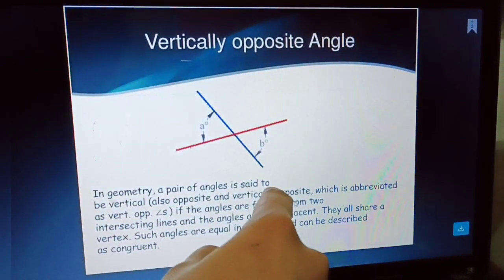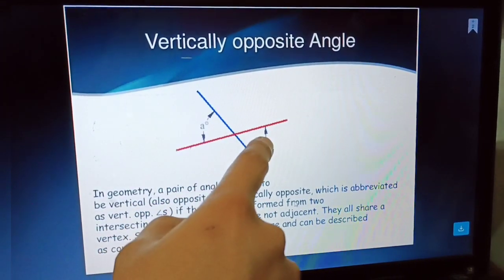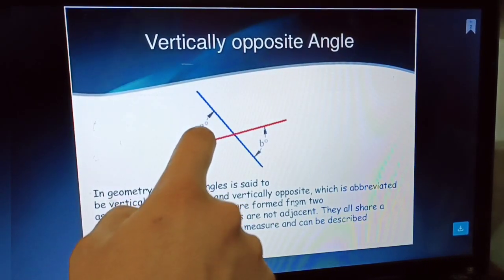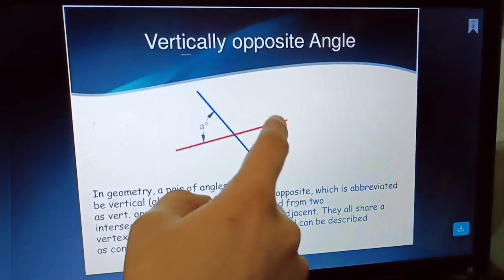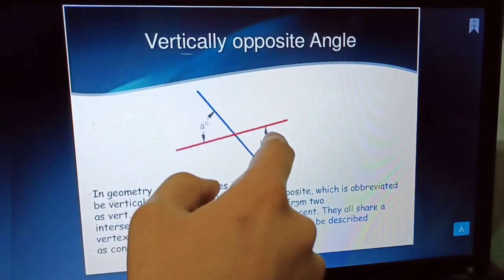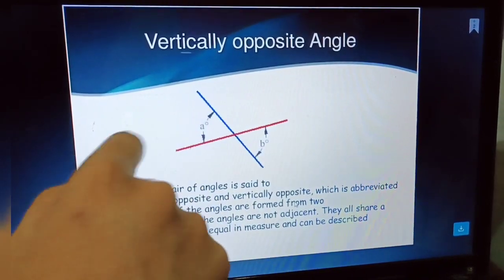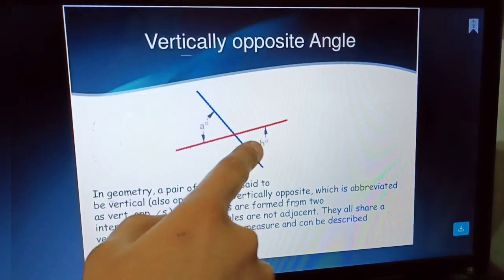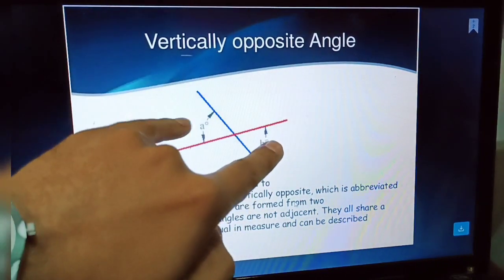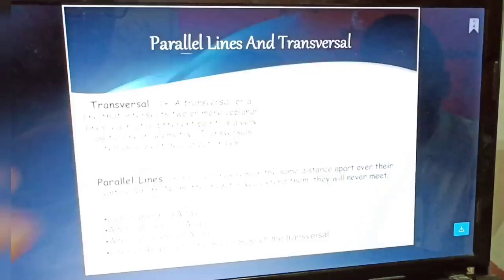Vertically opposite angles: when two lines intersect, different angles are formed. The angle exactly opposite to a given angle is its vertically opposite angle. If this angle is A, the exactly opposite angle is B — A is opposite to B. Vertically opposite angles are always equal. The opposite angle is always equal to the other.